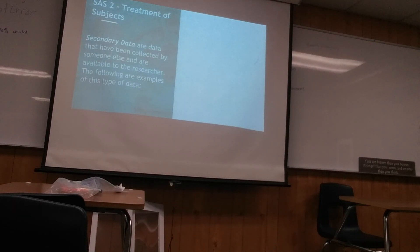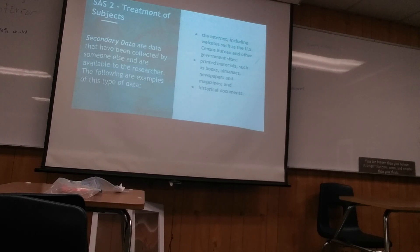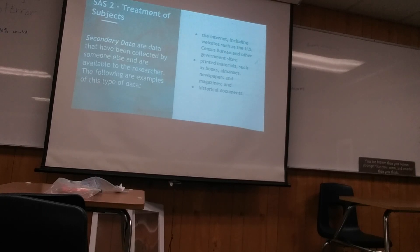Secondary data are data collected by someone else and available to the researcher. Examples include the Internet — such as the U.S. Census Bureau and other government sites — printed materials such as books, almanacs, newspapers, and magazines, and historical documents such as the Bible or history books, which are considered antiquated and accepted as fact by all parties.